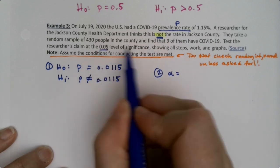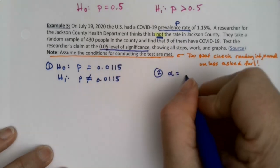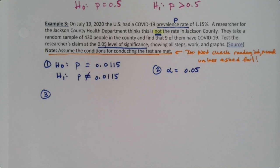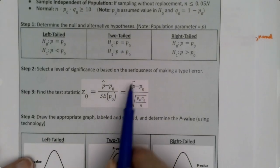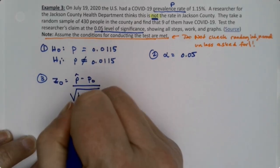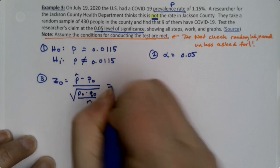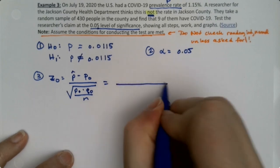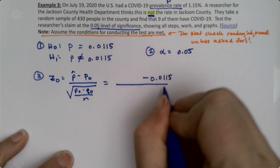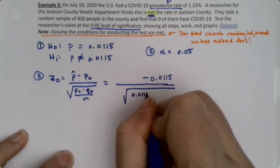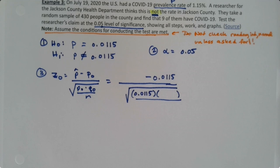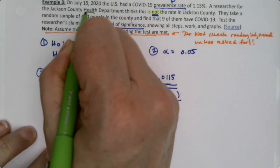Step two: alpha has to be given somewhere—there it is. Alpha is our level of significance, so 0.05. Step three: now this is the annoying step, the step all students hate because you have to write out this formula. z0 is p-hat minus p0 over the square root of p0 times q0 over n. Well, p0 is easy because p0 is 0.0115. I'm going to have to figure out q0. I know that n is 430—there's n.